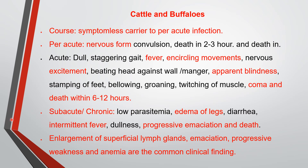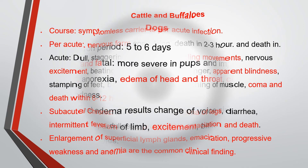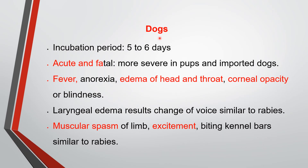In subacute and chronic cases, the level of parasitemia is generally less. Edema of the legs, diarrhea, intermittent fever, dullness, progressive emaciation, and death are observed. Common clinical findings in cattle and buffaloes include enlargement of superficial lymph nodes, emaciation, progressive weakness, anemia, and dullness. Calves are also commonly affected, with an incubation period of 5 to 6 days. Acute cases are fatal.